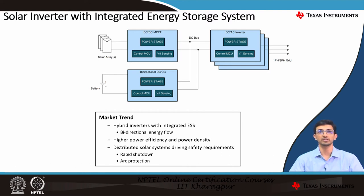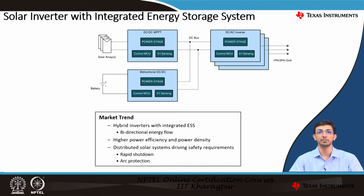The second application is the solar inverter with integrated energy storage system. The solar arrays are connected to the DC-DC stage with maximum power point tracking (MPPT), which ultimately feeds into the DC-AC inverter stage. We also require an integrated energy storage system — a battery pack — with a bi-directional DC-DC stage connected to the DC bus. The market trend here is a hybrid inverter with integrated ESS (energy storage system). This also requires bi-directional energy flow and demands high power efficiency and power density.